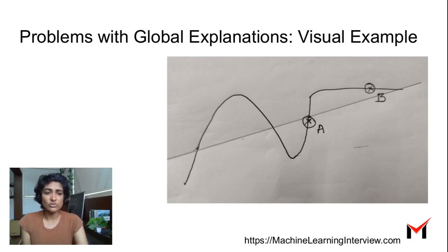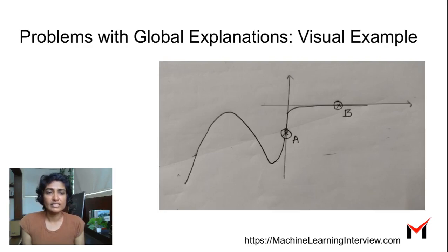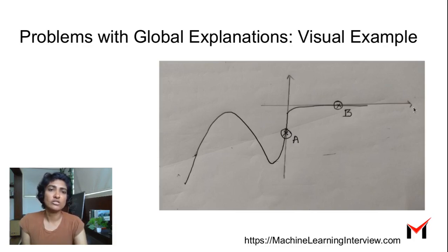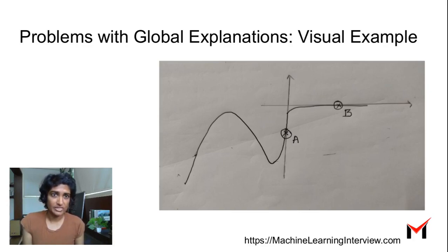But the truth is, if you look at two specific points A and B locally: for point A, pretty much only the Y coordinate is important, because if you try to approximate point A locally, it's almost a vertical line — Y is changing but X is not changing at all. And if you take point B locally, it's almost a horizontal line — X is changing but Y is not important at all when explaining point B.